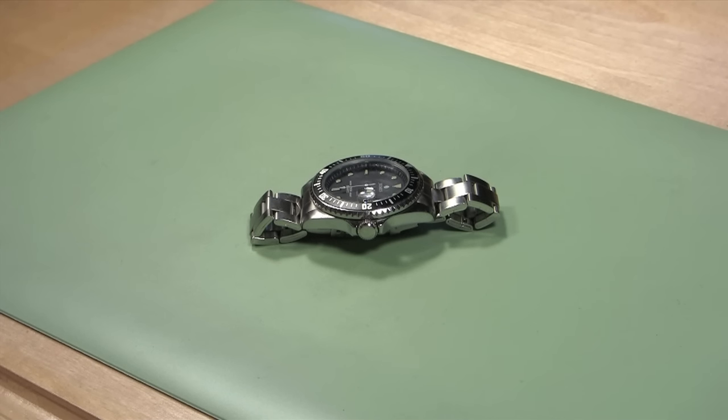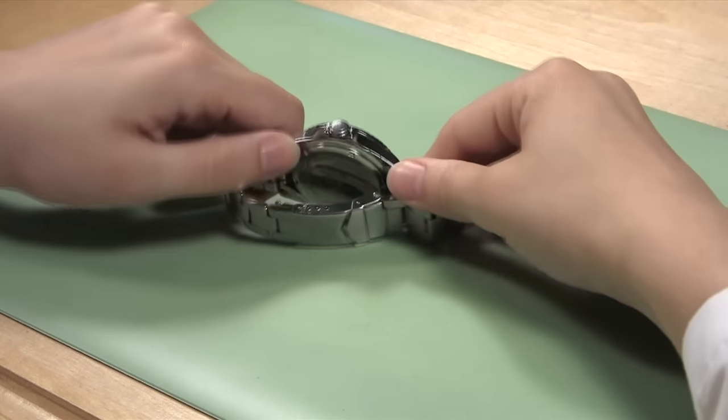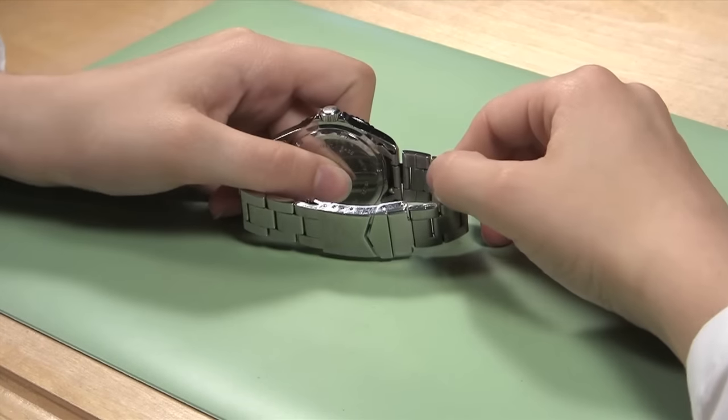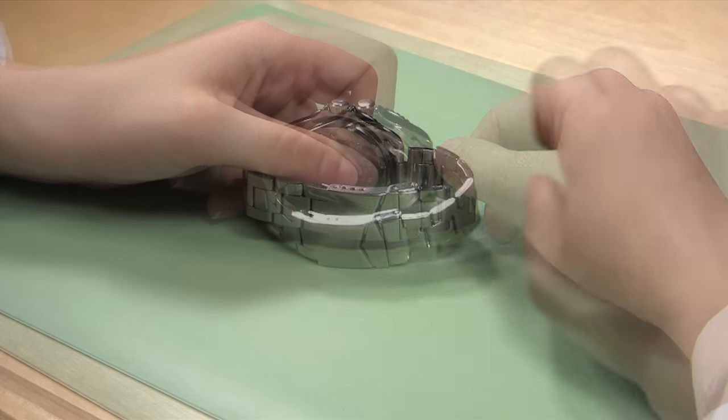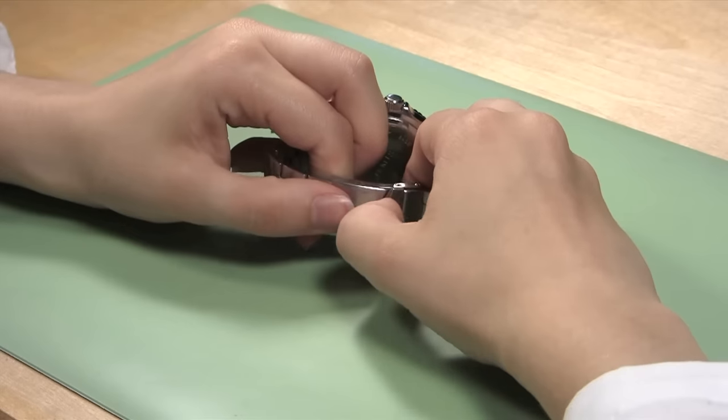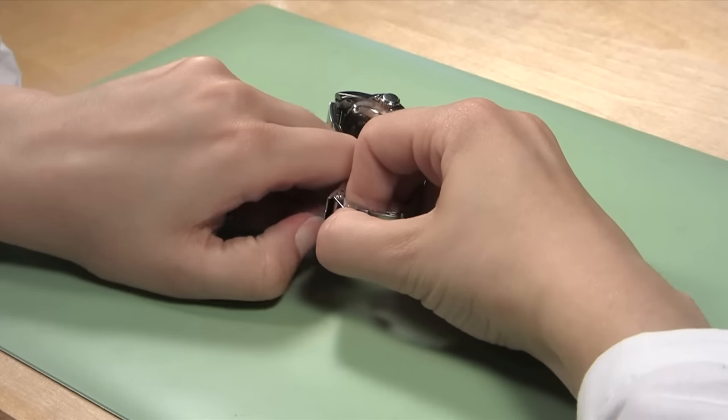The first step in changing your watch band is to remove the existing watch band. Start by holding the watch so that the back is facing you. Be sure that if the watch is sitting on the crown, you are not putting pressure on the crown. If you need more space to see the back of the watch case, you can open the watch band clasp.